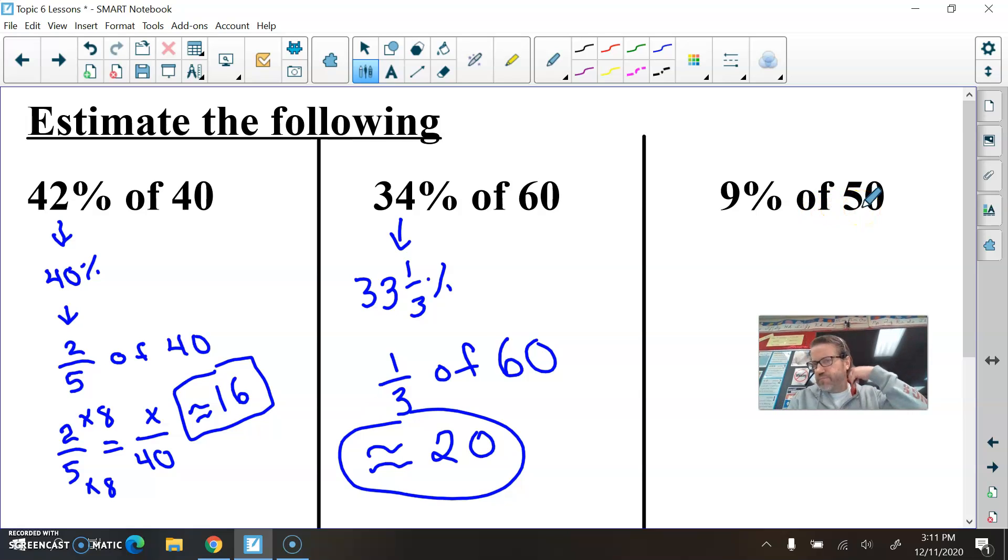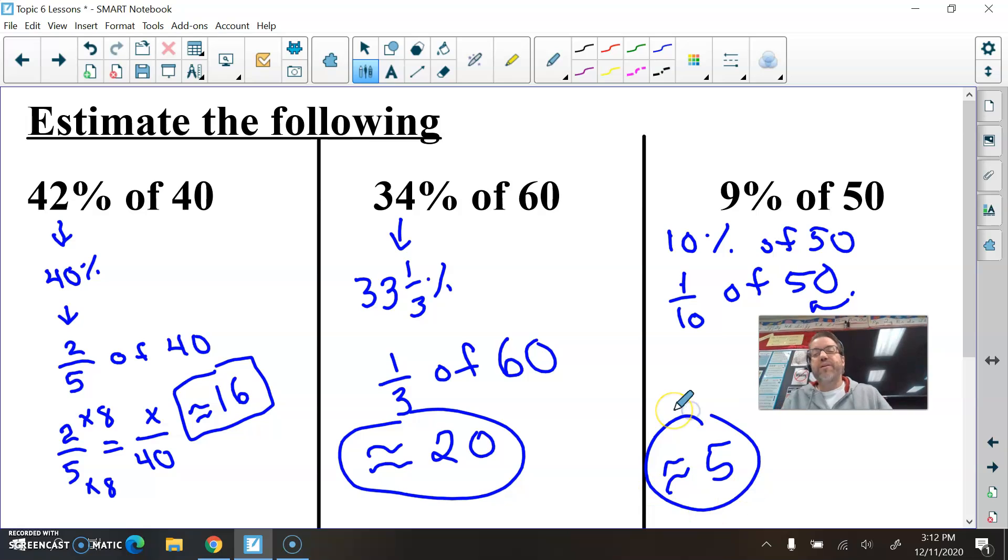Hey, 9% of 50. 9% is very close to 10% of 50. Remember, 10% is the same thing as one-tenth of 50. And if you want 10% or one-tenth of something, just divide by 10. Move the decimal point left one space, and you get 5. About 5. There's my squiggly equal sign. It's approximately equal to 5. Isn't that easy? If you can memorize some of those benchmark fractions, which you need to do.